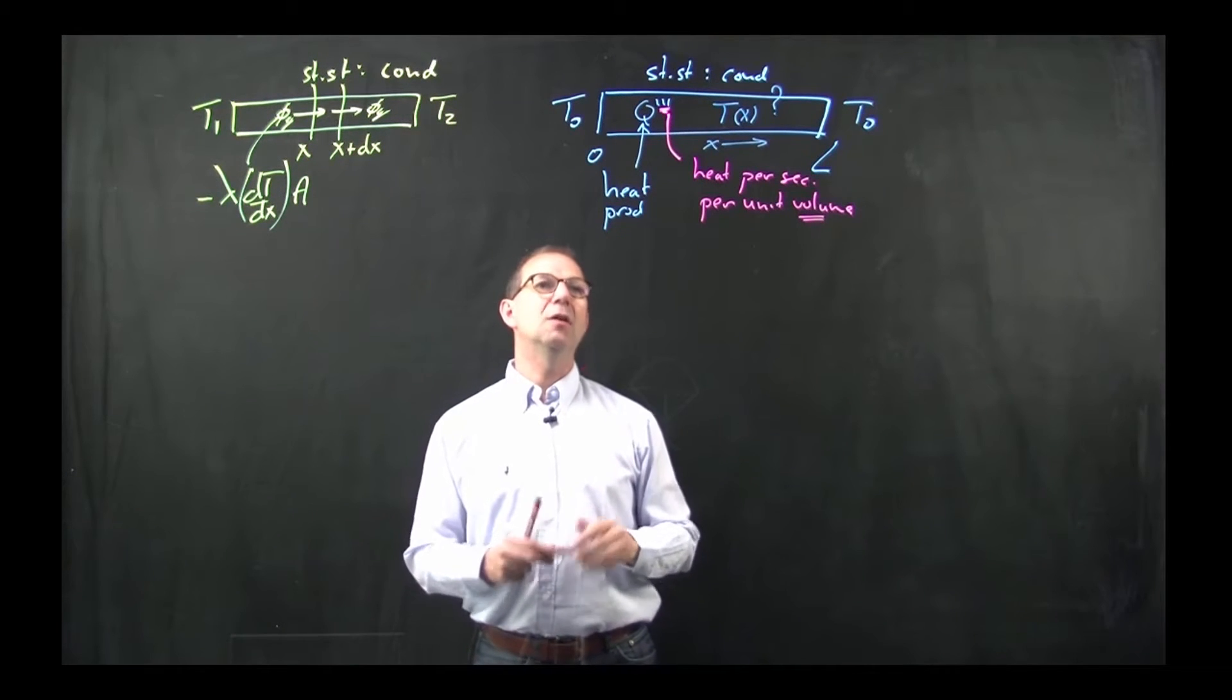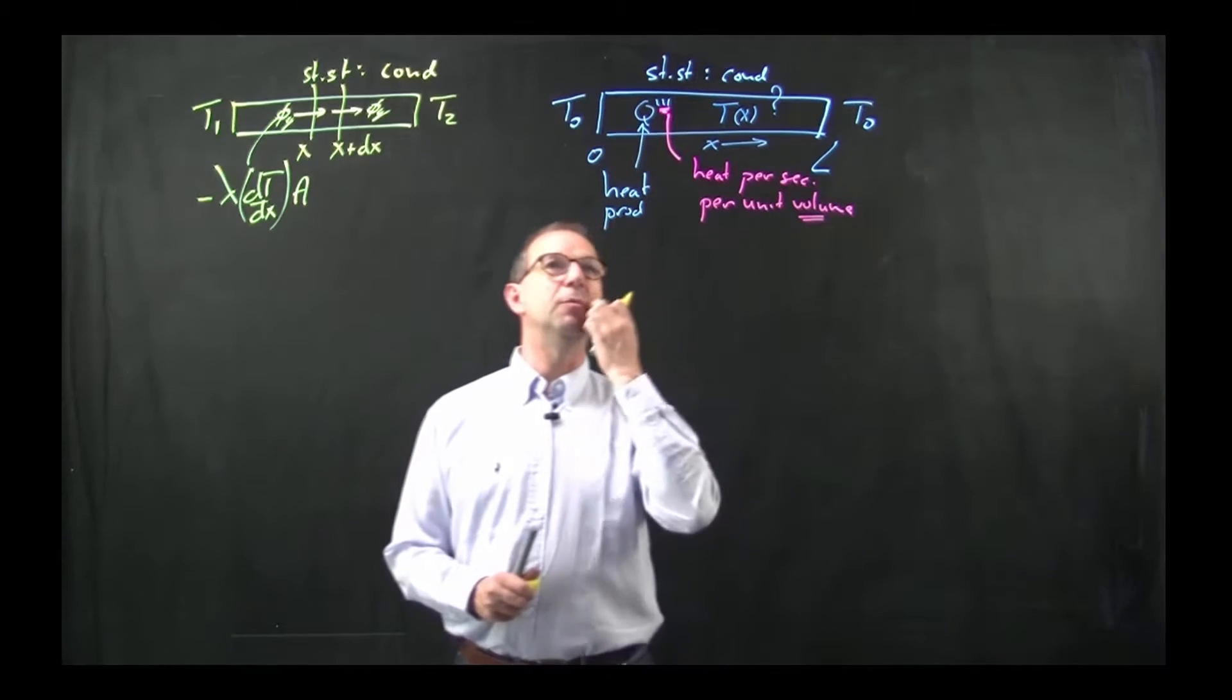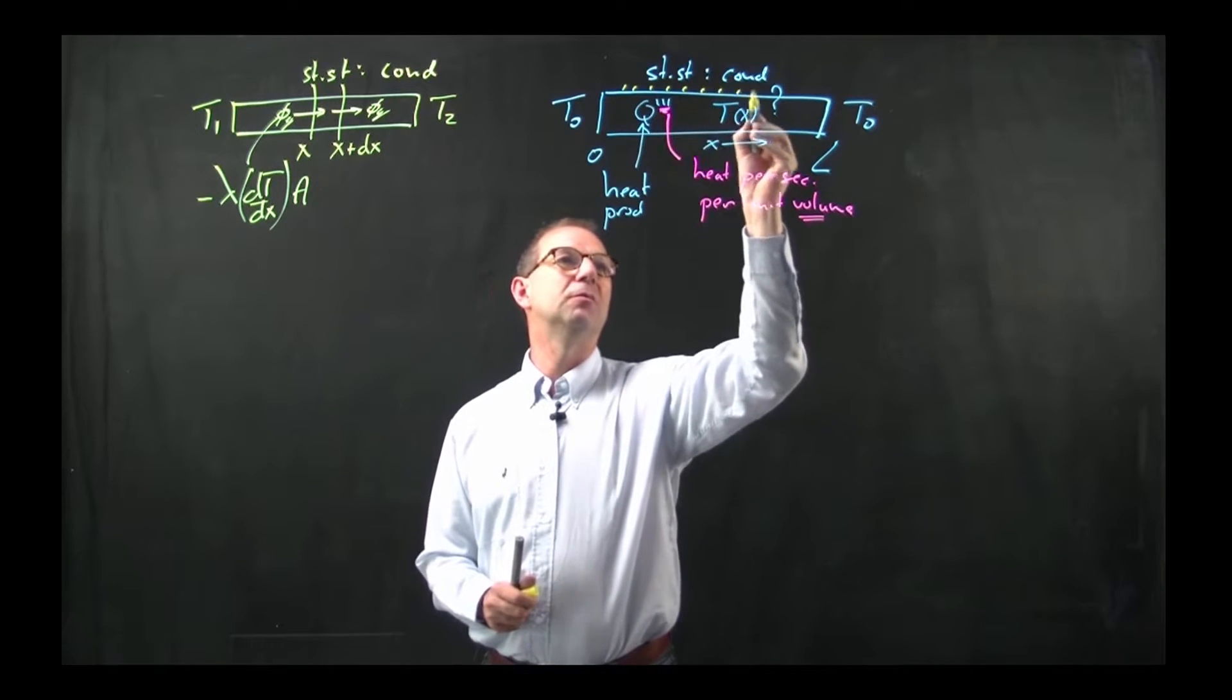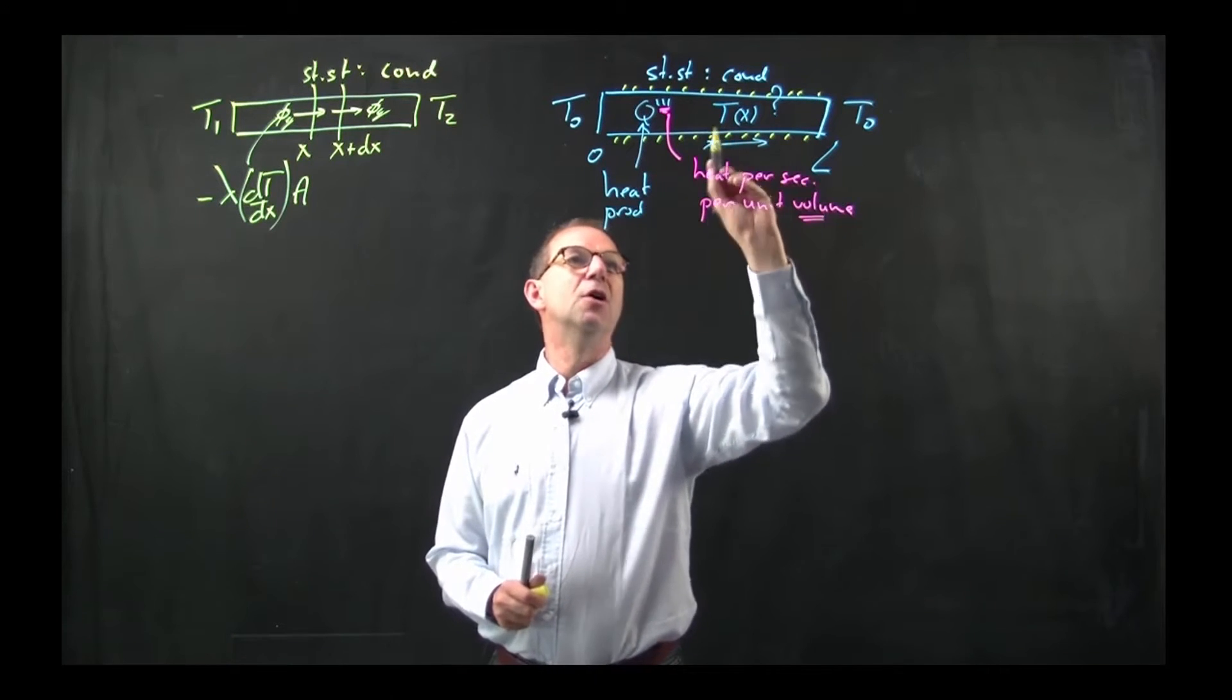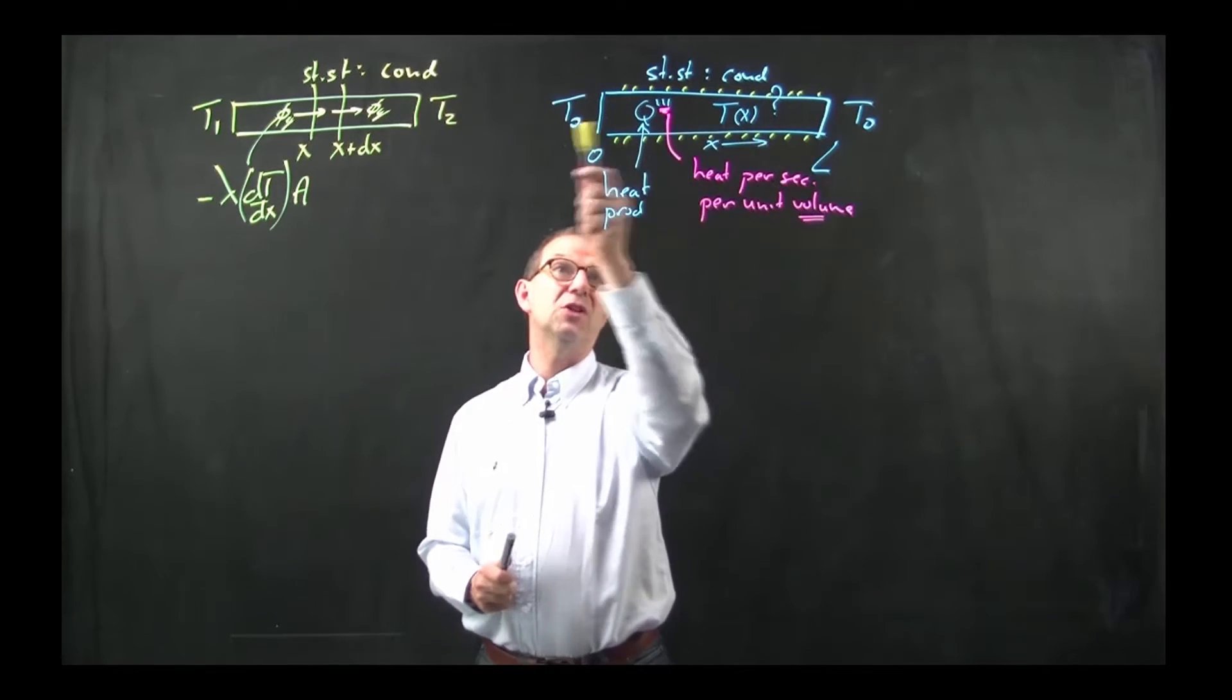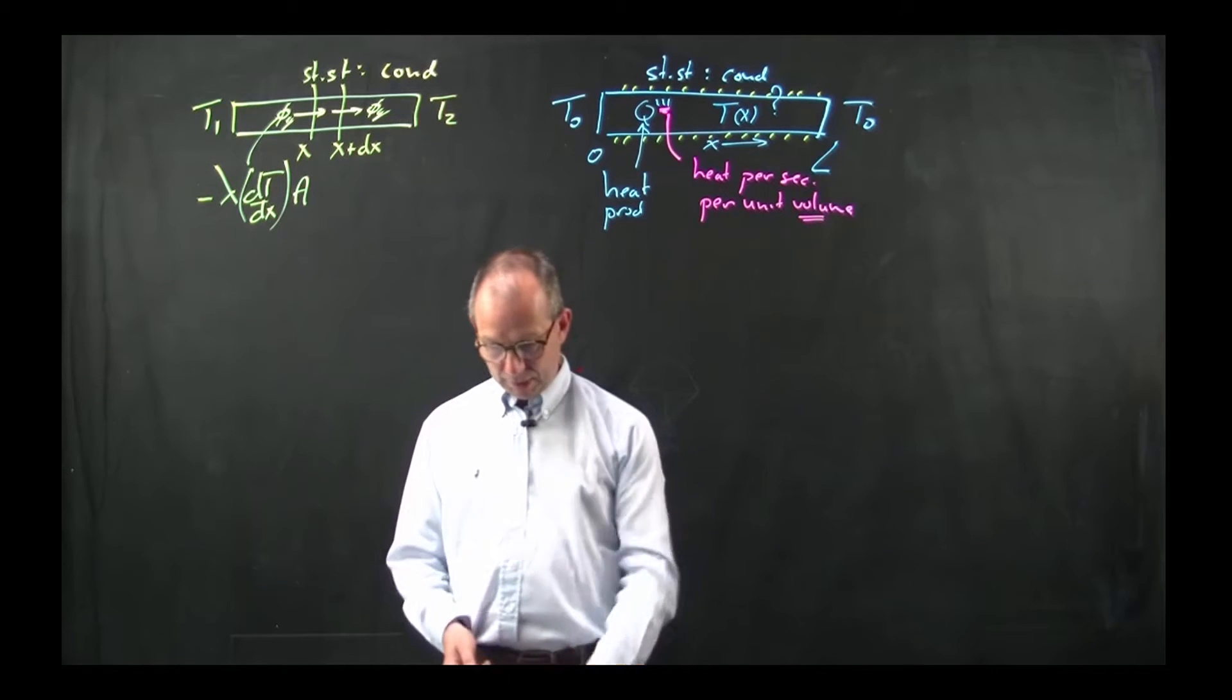Let's see what governs that and make this more precise. We are going to assume this is a one-dimensional problem. The outside of the rod, all around, is perfectly isolated. No heat will move in and out through the yellow sides. The only transport in steady state can thus be left-right, right-left.